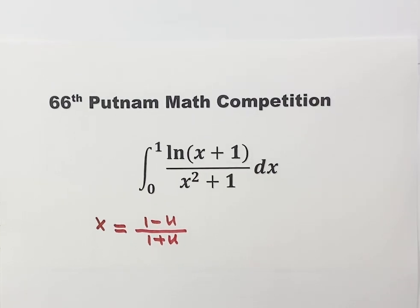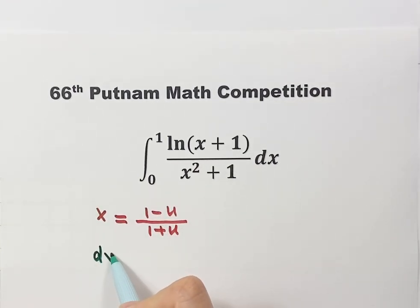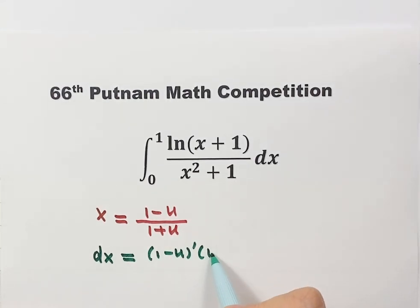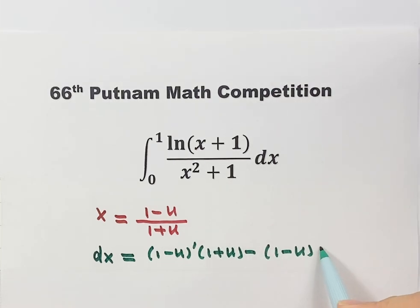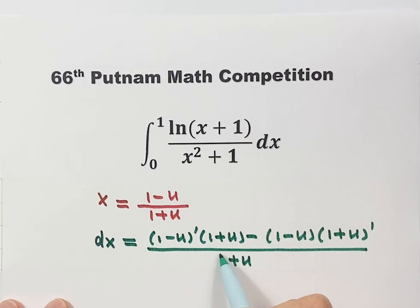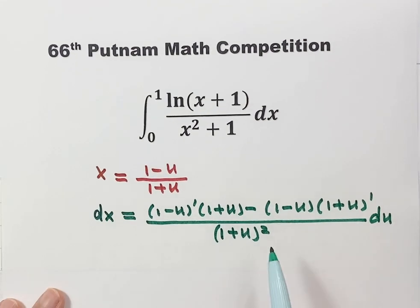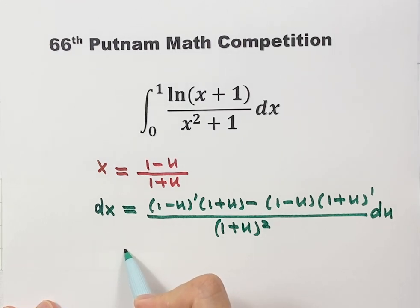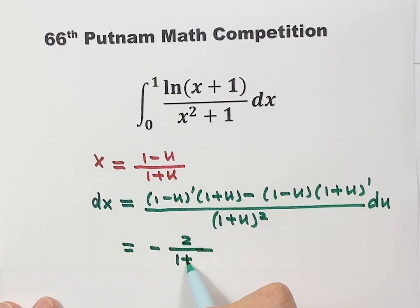Next we figure out what dx is. Using the quotient rule: take the derivative of the top times the bottom, minus the numerator times the derivative of the bottom, all divided by (1+u)², which simplifies to -2/(1+u)² du.